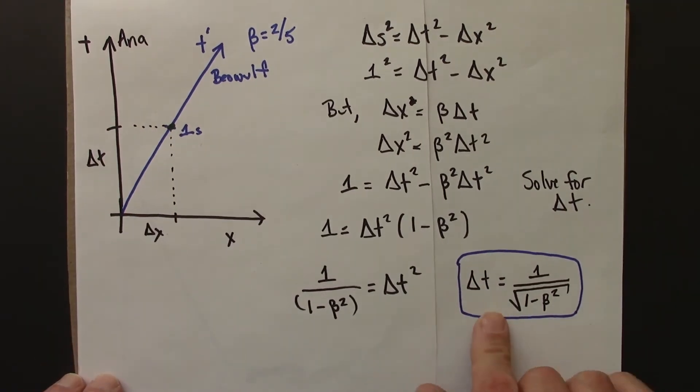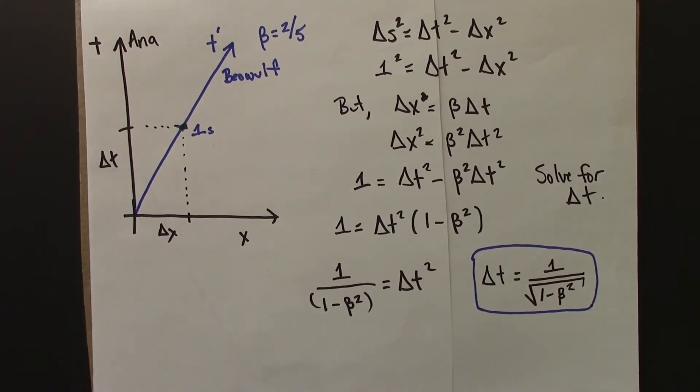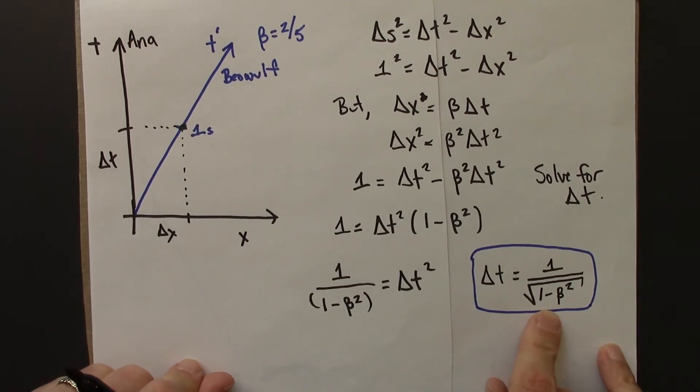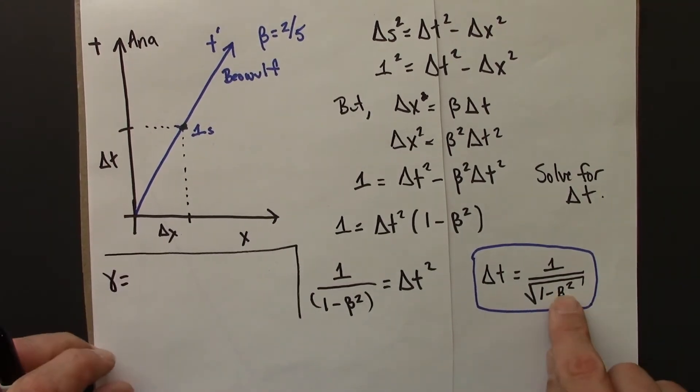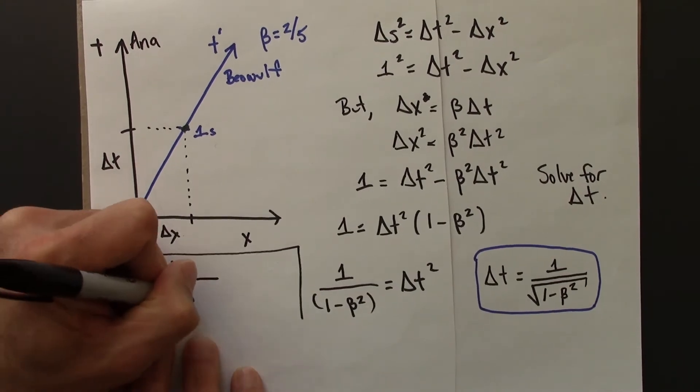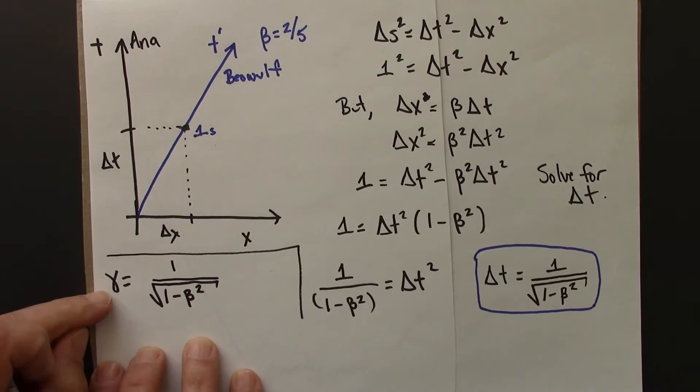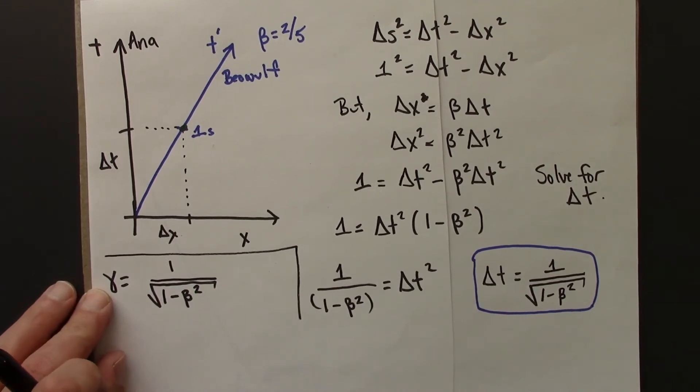Alright, so let me introduce a little bit more notation and plug in a number here to kind of get a feel for how this works. So, let's see. So this quantity, 1 over 1 minus beta squared, it's going to come up a lot in this unit. It comes up a lot in special relativity. And so it's conventional to give this a different name. It just saves some ink and some writing. So, this 1 over square root 1 minus beta squared is usually just denoted gamma. So this is another lowercase Greek letter, the letter gamma.